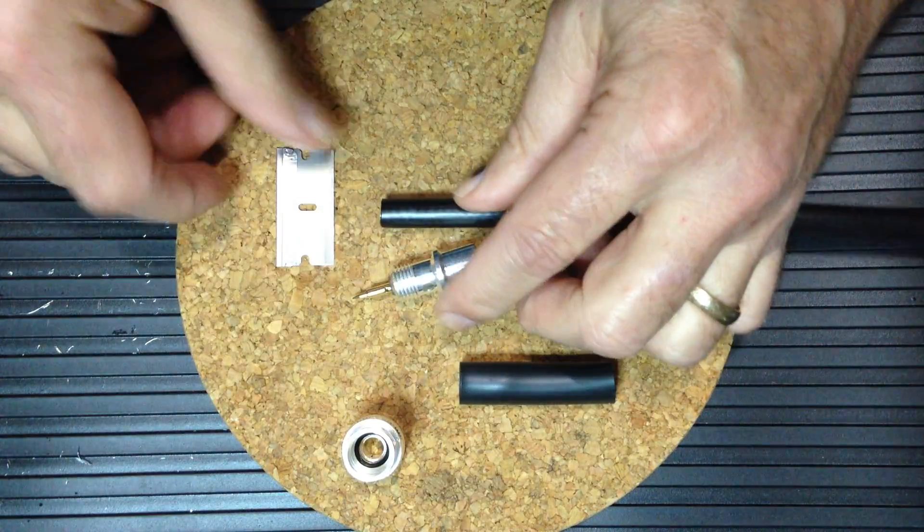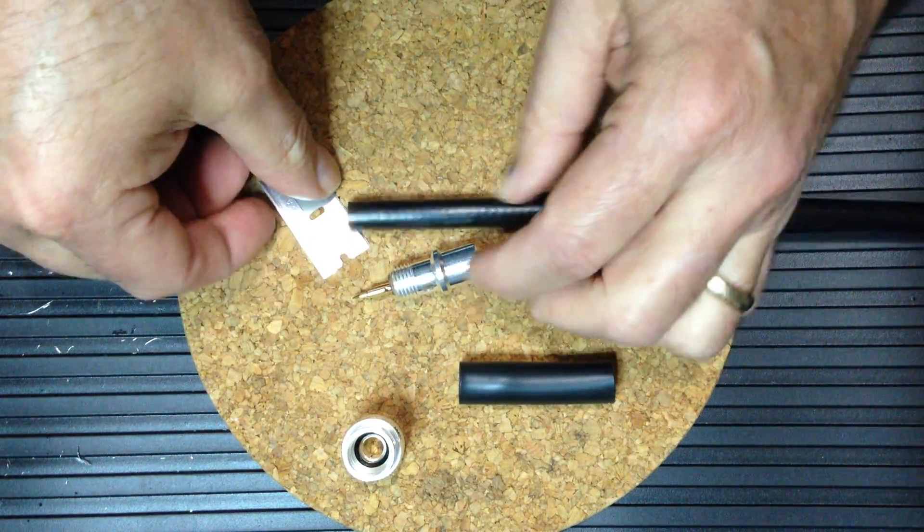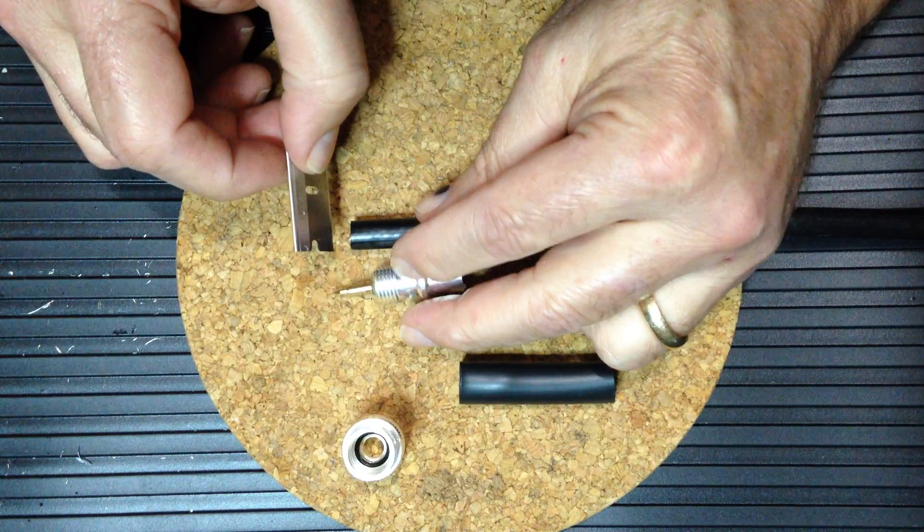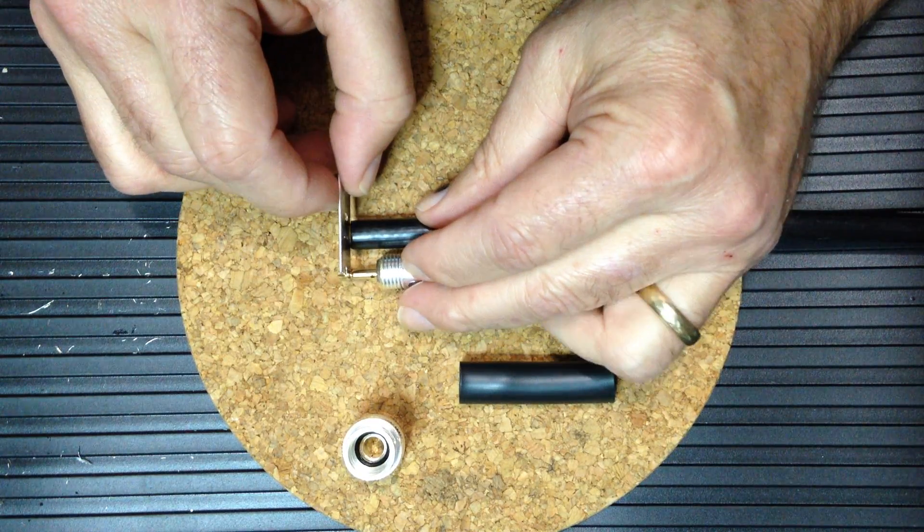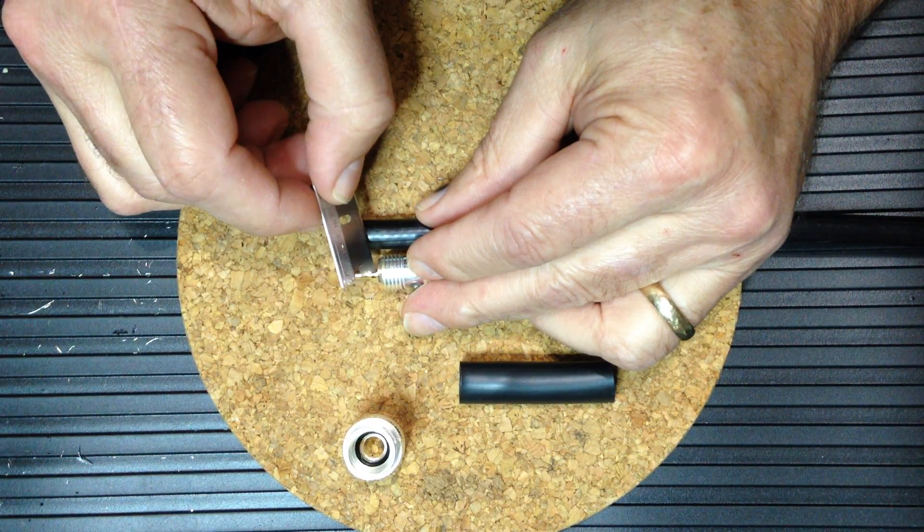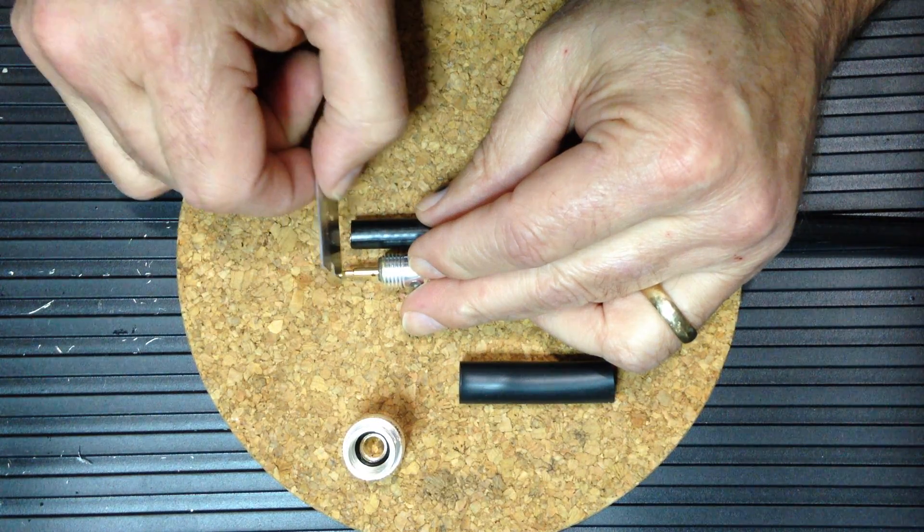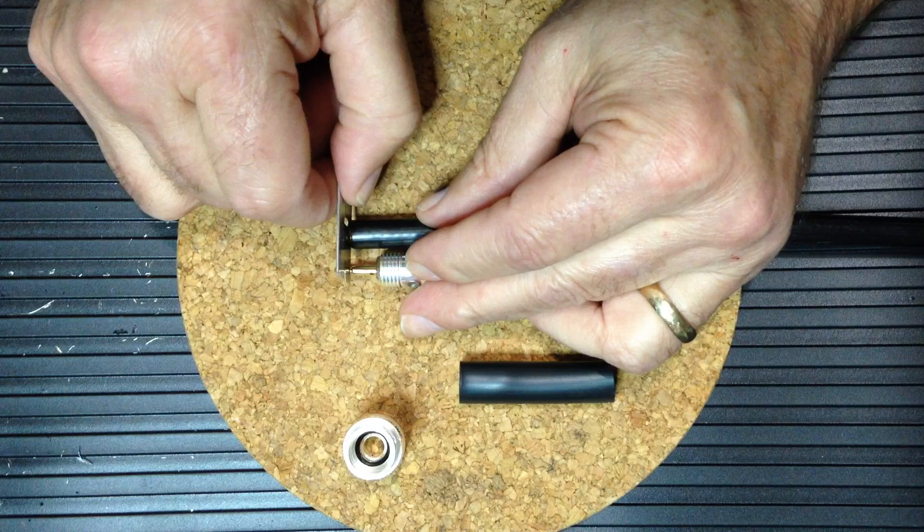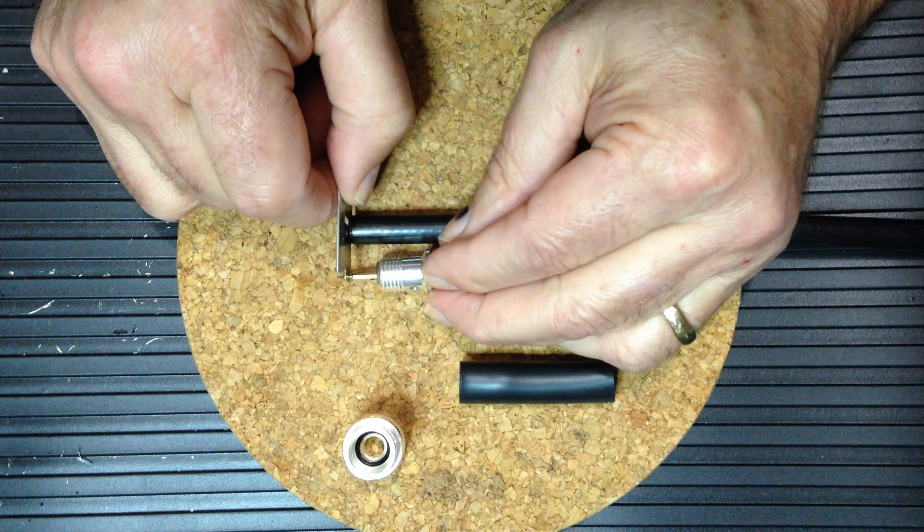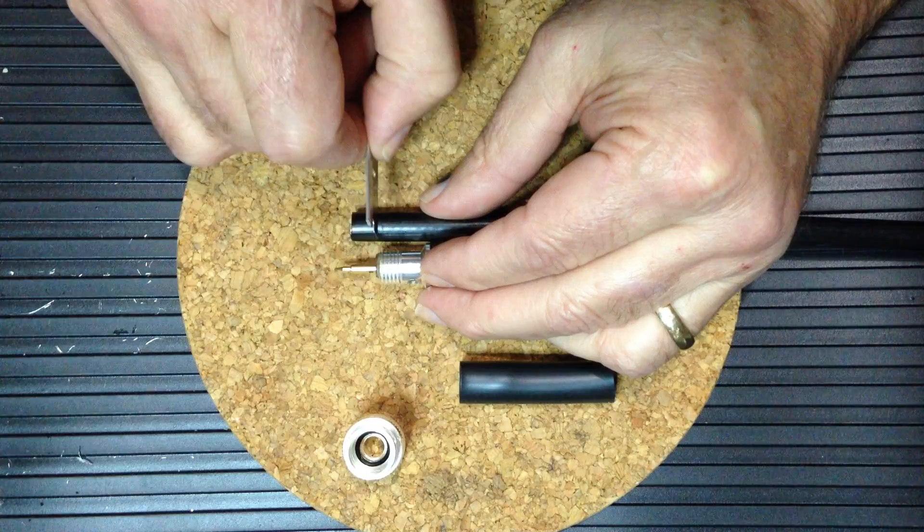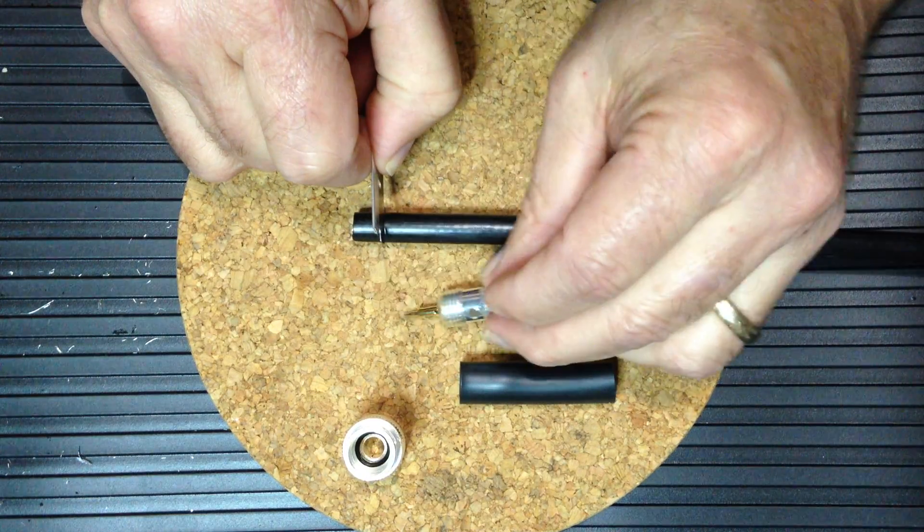We'll begin the prep by using the connector as a reference. We will identify where to make our first cut. If you look at the connector you'll notice that the center pin has a thickened portion and a thin portion, and we'll want the center conductor of our coax to come to the end of the thickened portion.